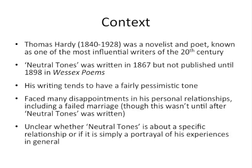The poem Neutral Tones was written in 1867, but it wasn't actually published until 1898 in the collection Wessex Poems. As we'll see a little bit later, this poem deals with the idea of memory. The fact that it was published quite a long time after it was originally written is fairly significant, because it's all about looking back on the past.